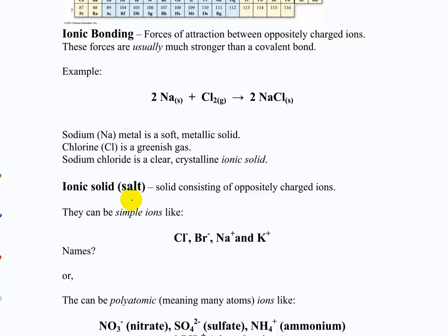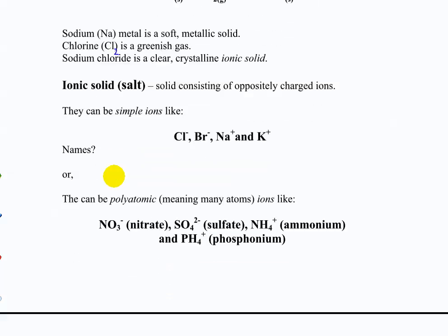Sodium metal is a soft metallic solid - you can cut it with a butter knife. Chlorine, Cl2, is a greenish gas with a covalent bond between the two chlorine atoms. But when you make sodium chloride, the ionic solid, it's clear, crystalline, cubic - you can see the faces. It's a solid that is hard to melt and hard to vaporize. An ionic solid, also known as a salt, is a solid consisting of oppositely charged ions. We'll use 'salt' as a general term for any ionic solid - any solid consisting of positive and negatively charged ions.